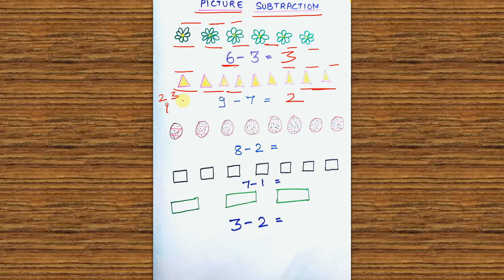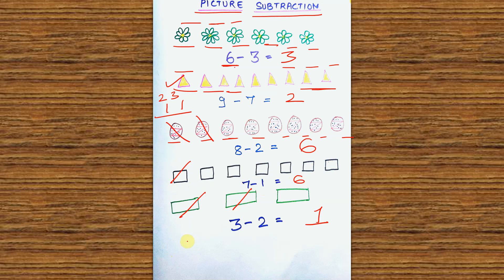This is made of 8 balls, which will be minus 2, so this will be 6. You can see this is 7 boxes, which we made as 8 minus 1. And this is 3 minus 2, so it will be 1. So for children who have a problem with digit subtraction, they can learn from picture subtraction so that they can understand subtraction properly.